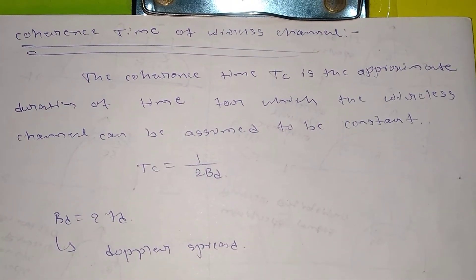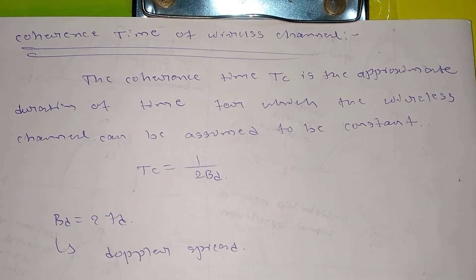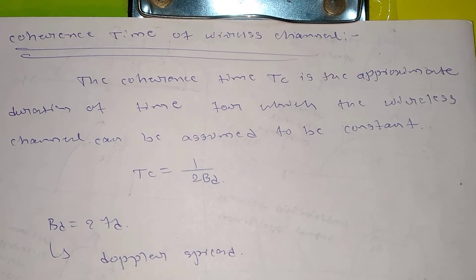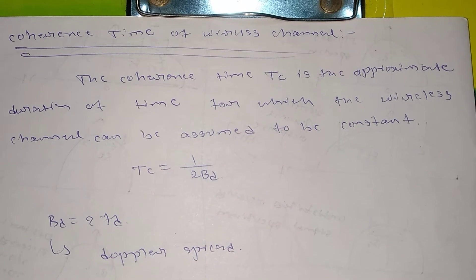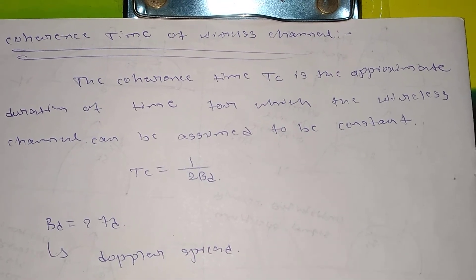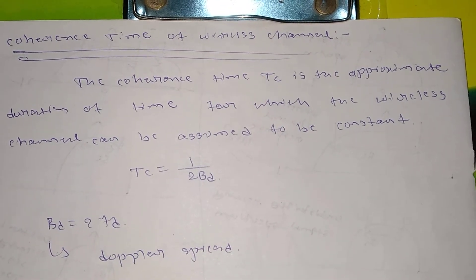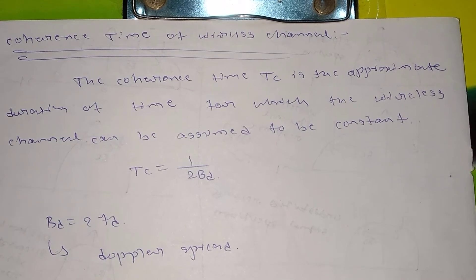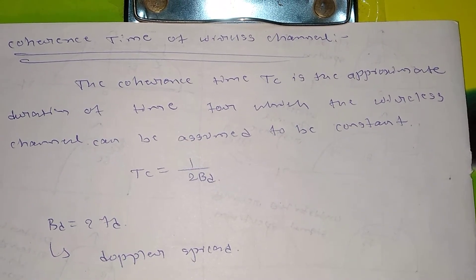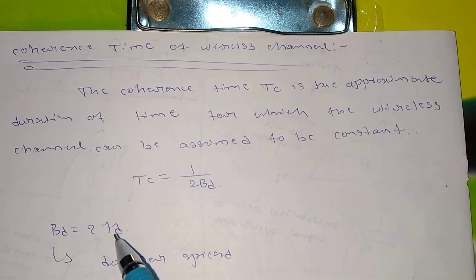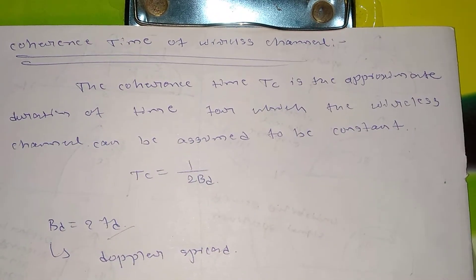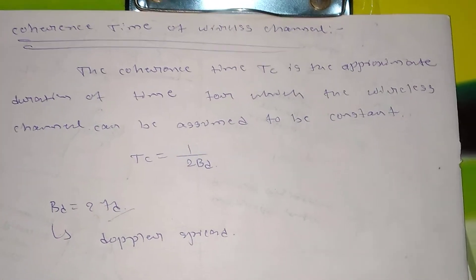The coherence time Tc is the approximate duration of time for which the wireless channel can be assumed to be constant, and it is given as Tc equal to 1 divided by 2BD, where BD is equal to 2 times FD. BD stands for Doppler spread and FD stands for Doppler shift frequency.